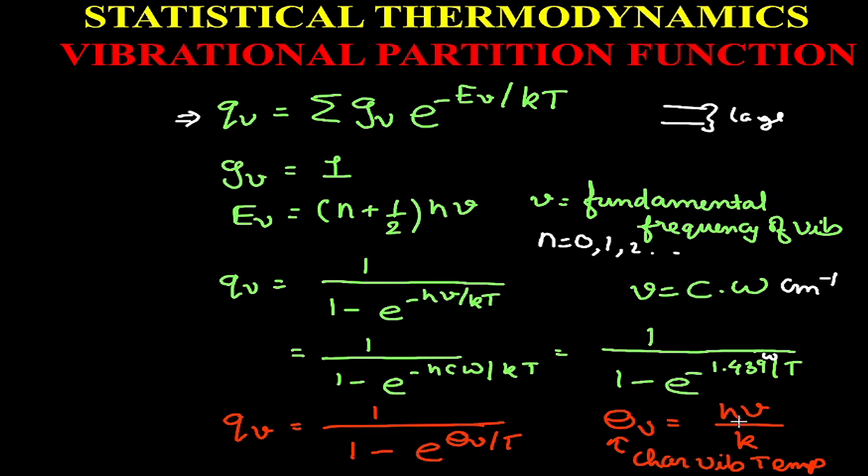Further, hν/k can be written as θv, which has units of temperature and is known as the characteristic vibrational temperature. When we substitute this, we get Qv = 1/(1 - e^(-θv/T)).